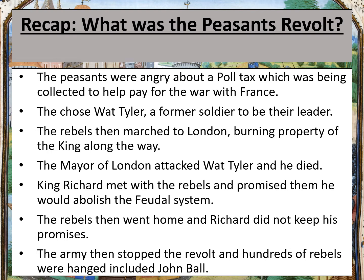Another factor that contributed to the Peasants' Revolt was the fact that King Richard was only 10 years old when he became king, and 14 years old at the time of the revolt. In order to help him rule the country, the king had advisers to help him make decisions. However, it was judged that these advisers weren't necessarily making the best decisions for the country. The Black Death had a big impact on peasants and contributed to the Peasants' Revolt. The peasants had become increasingly angry that they were still poor.